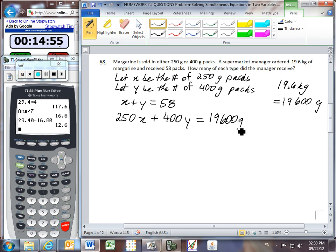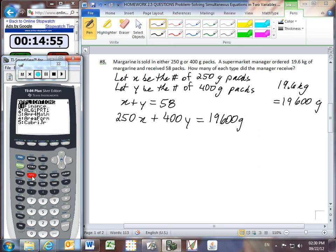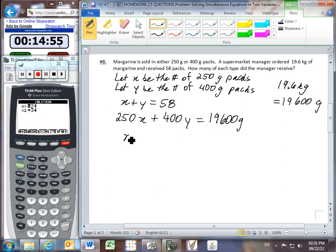And so now I'm going to solve this using PolySimult so that we can practice doing this. So I'll go into my apps and I'll select PolySimult 2. And I want to go into the simultaneous equation solver. And I've got two equations and two unknowns, so I'm ready to go to next. My matrix, if I look at it, it's 1X plus 1Y equals 58, and it's 250X plus 400Y is equal to 19,600 total grams. Okay, just double check. The matrix looks good. And so I'll now say solve. And I find out that I received 24 of the 250 gram packs and 34 of the 400 gram packs.